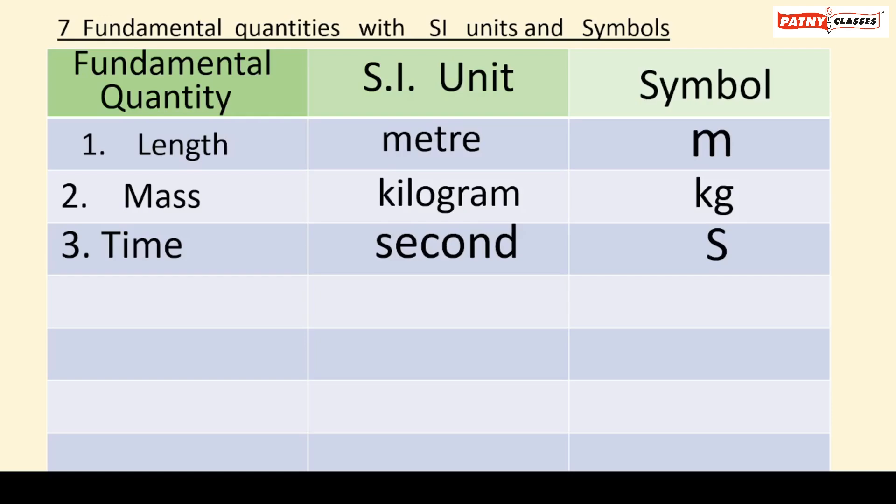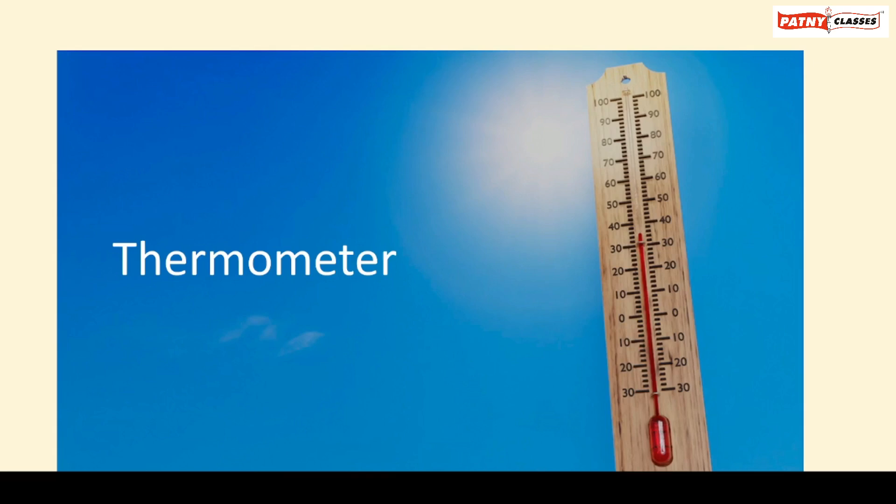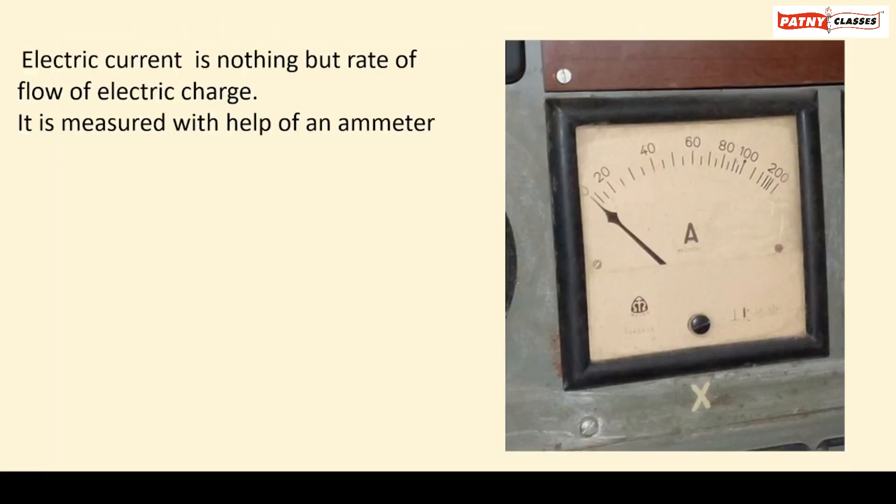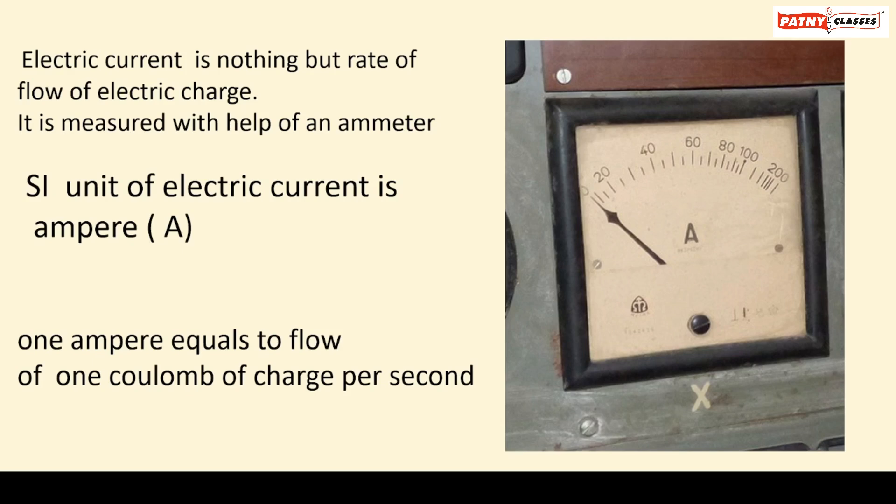The next fundamental quantity under the SI system is temperature, whose SI unit is Kelvin and symbol is K. The temperature can be measured with the help of a thermometer. The fifth fundamental quantity under the SI system is electric current, whose SI unit is ampere and symbol is capital A. Electric current is the rate of flow of electric charge. It is measured with the help of an ammeter. One ampere equals the flow of one coulomb of charge per second.